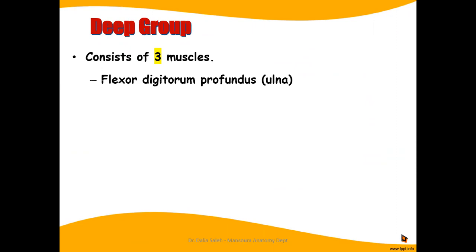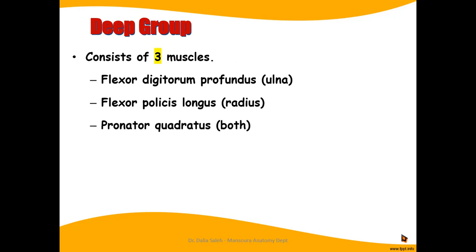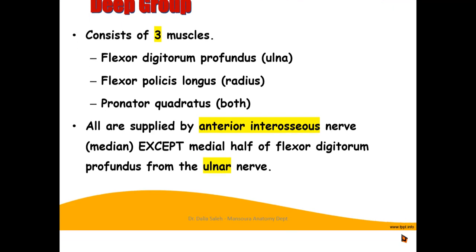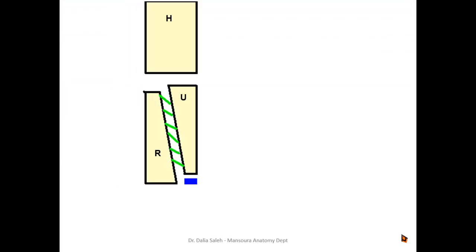The deep group consists of three muscles: the flexor digitorum profundus, which arises from the ulna; the flexor pollicis longus, which arises from the radius; and the pronator quadratus, which arises from both radius and ulna. They are all supplied by a deep branch of the median nerve called the anterior interosseous nerve, except the medial half of the flexor digitorum profundus, which is also supplied by the ulnar nerve.